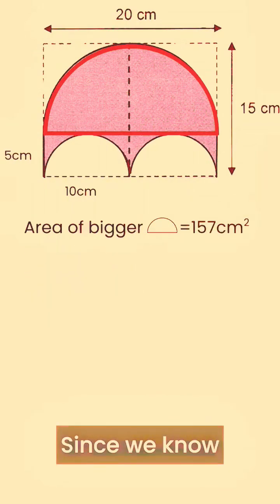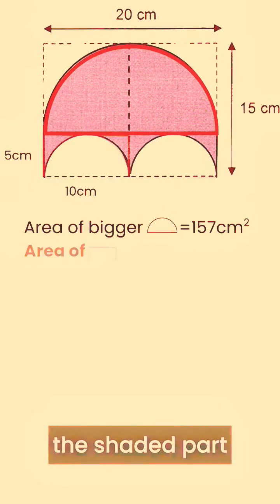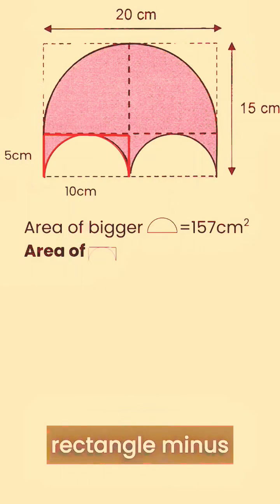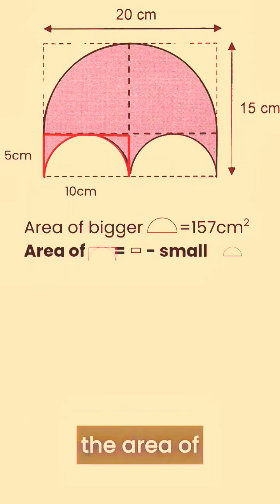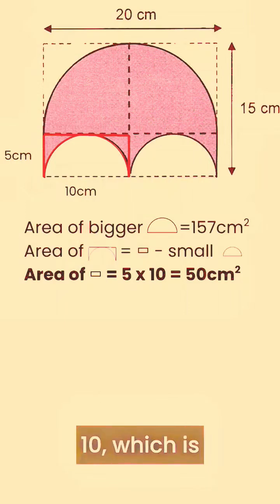Since we know the area of the bigger semicircle, the next thing is we want to get the area of the shaded part below the bigger semicircle, which is basically the rectangle minus the smaller semicircle. And to get the area of the rectangle, it's basically 5 times 10, which is 50 cm².